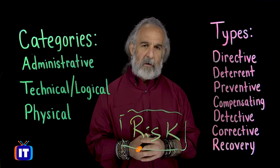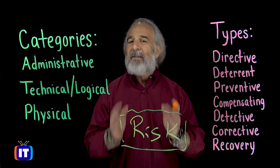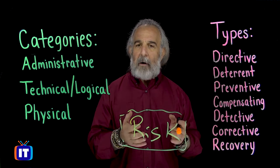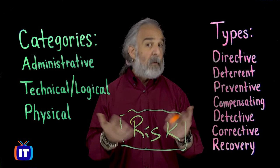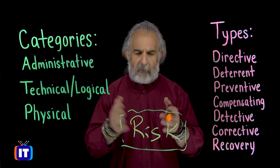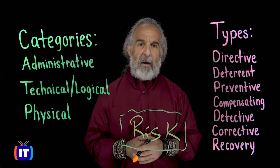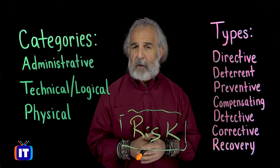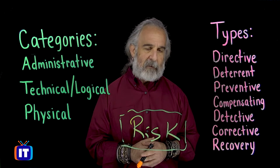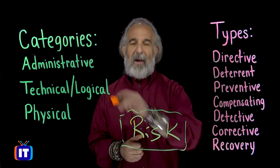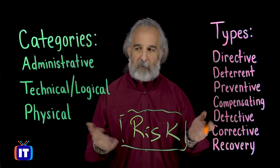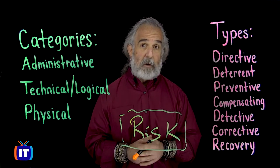Technological controls are operating system-driven and implemented through software. They allow us to implement safeguards, controls, and countermeasures — all synonyms for one another — that allow us to treat risk, minimize it, and minimize its impact on us, our business, and the assets of the organization. The key is that they're software-based, implemented through the operating system and or an application.